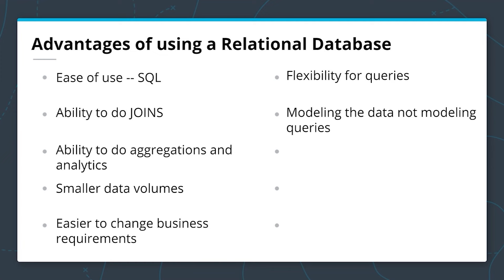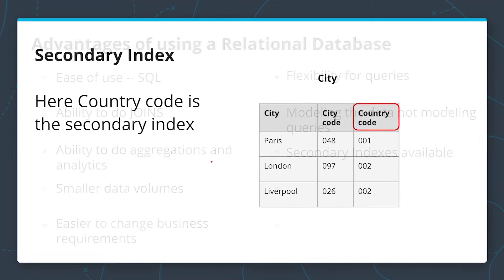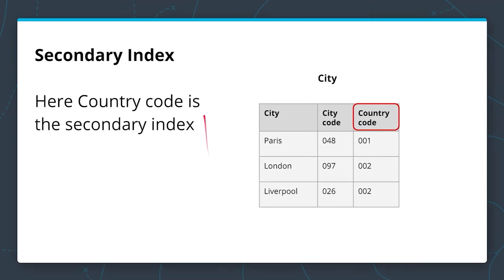You also get the added benefit of secondary indexes. Another fundamental concept is the idea of secondary indexes — you would like to efficiently search your data by an index that is not your primary key. You can add a secondary index for quick searching.